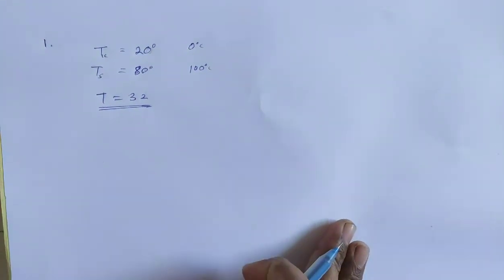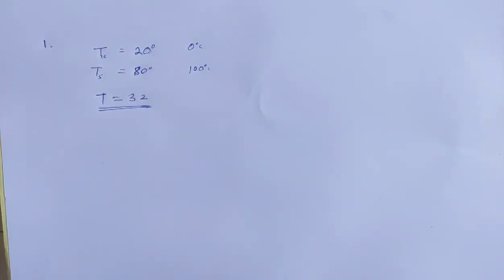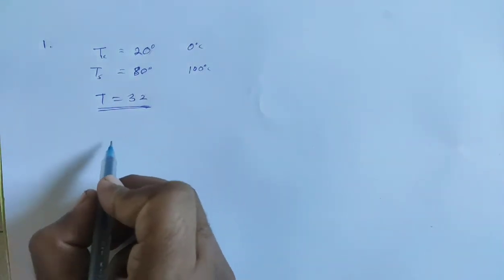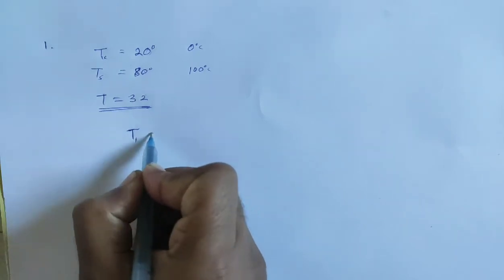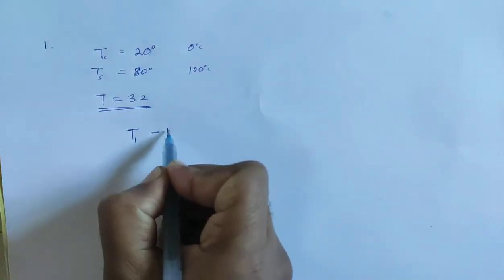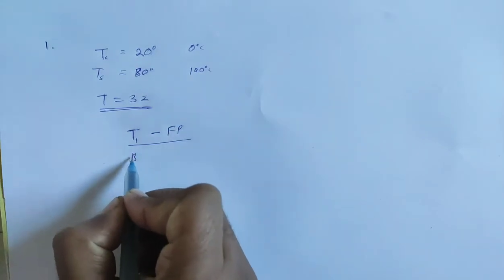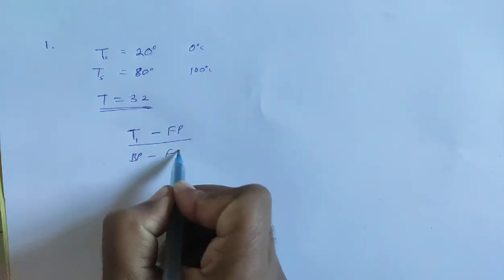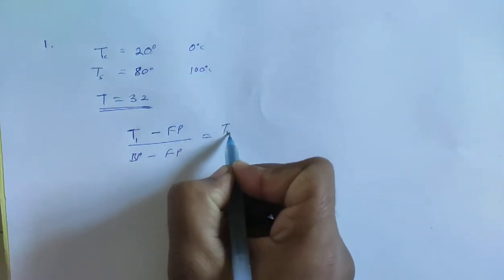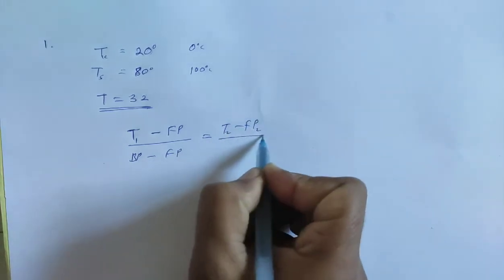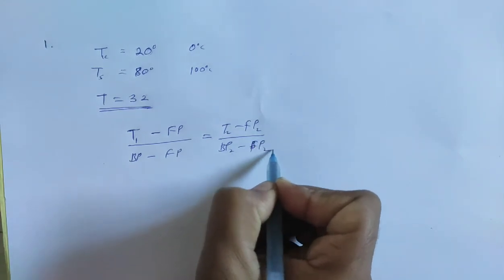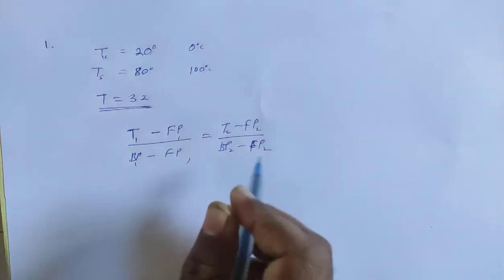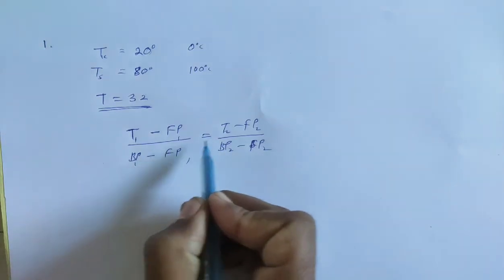So for two scales, the temperature relation formula is: (Scale1 - freezing point of Scale1) / (boiling point of Scale1 - freezing point of Scale1) = (Scale2 - freezing point of Scale2) / (boiling point of Scale2 - freezing point of Scale2).